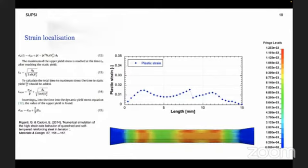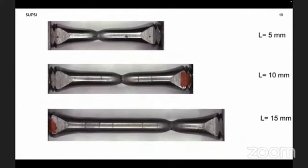In the next two slides, we will see the experimental results. This is the picture of the broken specimens with different gauge lengths, and this is the simulation obtaining a very good similarity.